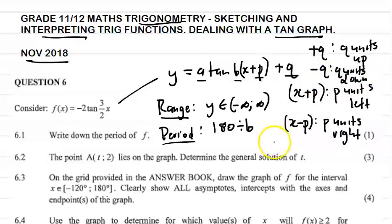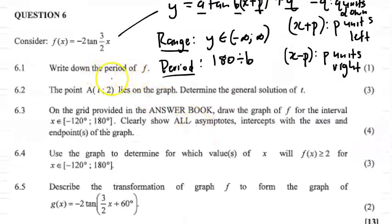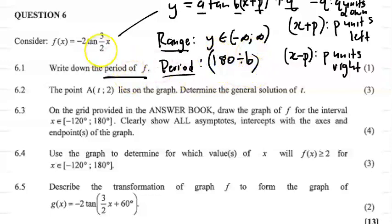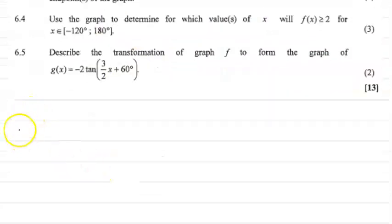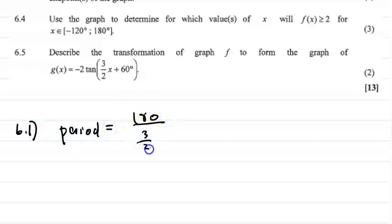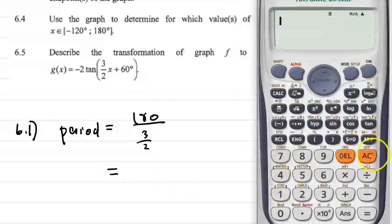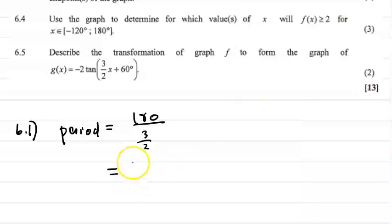Remember, this is true for all functions. Now let's look at Question 6.1: write down the period of f. So f of x equals minus 2·tan(3/2·x). The period of f will be 180 over b, and our b value is 3/2. So: period equals 180 divided by 3/2, which gives us 120 degrees. Therefore the period of this graph is 120 degrees.